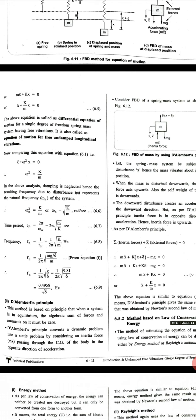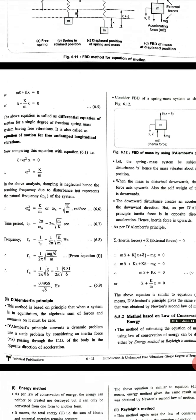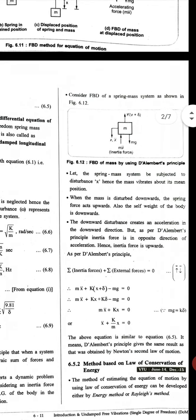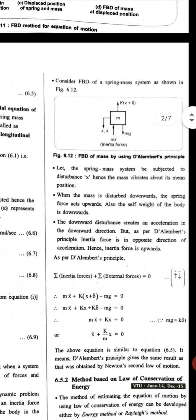D'Alembert's principle converts a dynamic problem into a static problem by considering the inertia force mx double dot passing through the center of gravity of the body in the opposite direction of acceleration. Consider the free body diagram of a spring-mass system as shown in Figure 6.12.